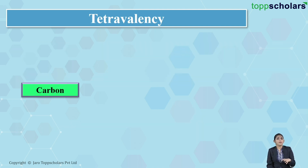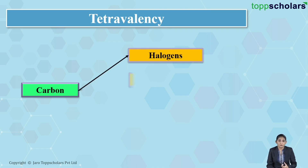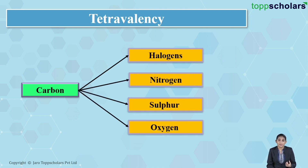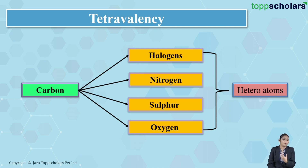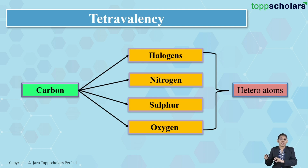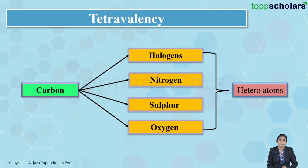This carbon atom, other than forming covalent bonds with hydrogen, also forms bonds with halogens, nitrogen, sulfur, and oxygen. Atoms of these elements are termed as heteroatoms. In order to satisfy its valency and become stable, carbon forms covalent bonds with these heteroatoms as well, resulting in the formation of a large variety of carbon compounds.